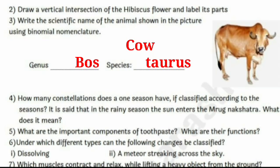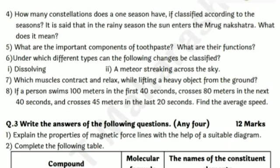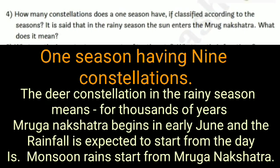Question number 4: how many constellations does one season have? If classified according to seasons, in the rainy season the sun enters the Mruga nakshatra — what does this mean? Answer: one season has nine constellations. The Mruga nakshatra in the rainy season means that for thousands of years, Mruga nakshatra begins in early June and rainfall is expected to start from that day. Monsoon rain starts from Mruga nakshatra, so this is called the season of the rainy season.